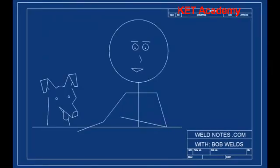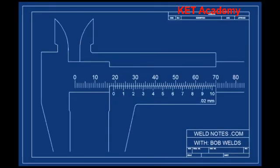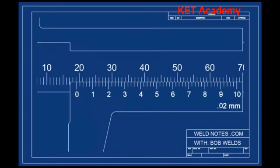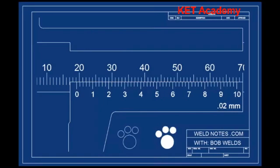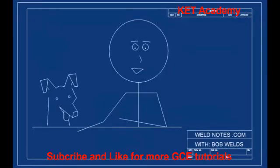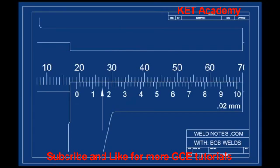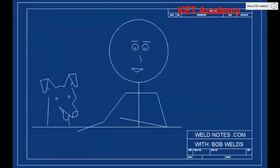Now let's try the full 0.02 millimeter resolution. I'll show the whole caliper then zoom in so you can see the vernier better. Pause the video and write down your answer. I'll point to the place where the vernier lines up to help — take a minute and check. The reading is nineteen point one six millimeters.